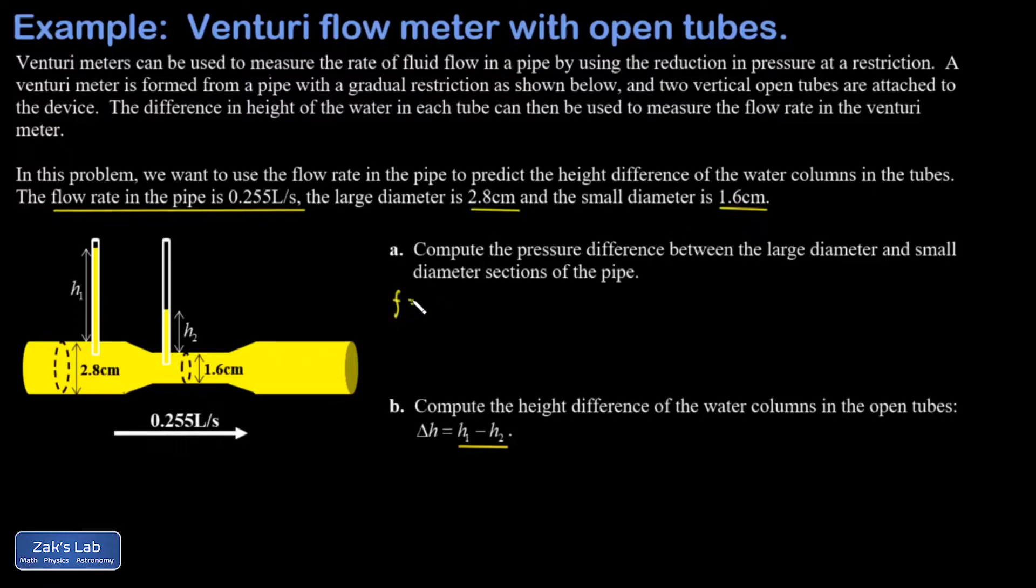In part A our strategy is to use the flow rate equation. Flow rate in cubic meters per second equals the cross-sectional area multiplied by the velocity. This will allow us to find the velocity in each part of the pipe, then we'll apply Bernoulli's equation to get the pressure.